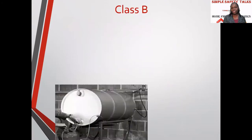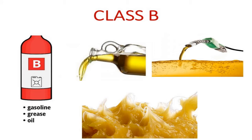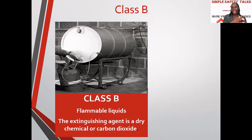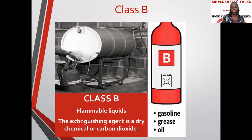For Class B, which is flammable liquids — gasoline, grease, oil — the extinguishing agent is dry chemical or carbon dioxide (CO2). That is why I said in earlier series that every workplace should consider the type of fuel in an area before selecting a fire extinguisher. The same applies to our homes — it is important to know the right type of extinguisher for each location.